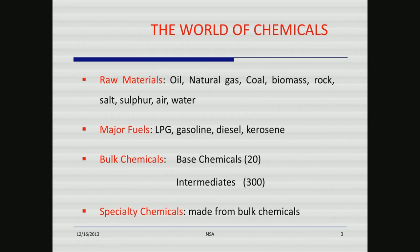The first thing that strikes you about the world of chemicals is you think there are infinite chemicals, but basically there are four groups. The raw materials are usually oil, natural gas, coal, biomass, rock salt, sulphur, air, and water. The major fuels are LPG, gasoline, diesel, and kerosene. The bulk chemicals are divided into base chemicals and intermediates — about 300 intermediates — and the speciality chemicals are made from bulk chemicals. These numbers will increase but are certainly not infinite; it is a reasonable number that you can handle.